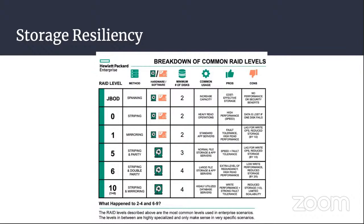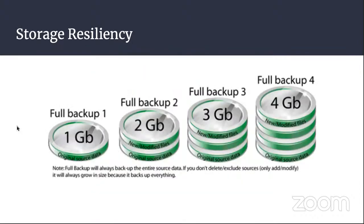RAID 10 is a mix of RAID 0 and 1. It requires four drives: two drives will be a stripe and two drives will be a mirror, so you have an exact copy of what two drives have. You don't have the full storage of four — you really have the storage of two — but everything is copied. That's one way of keeping data resilient.